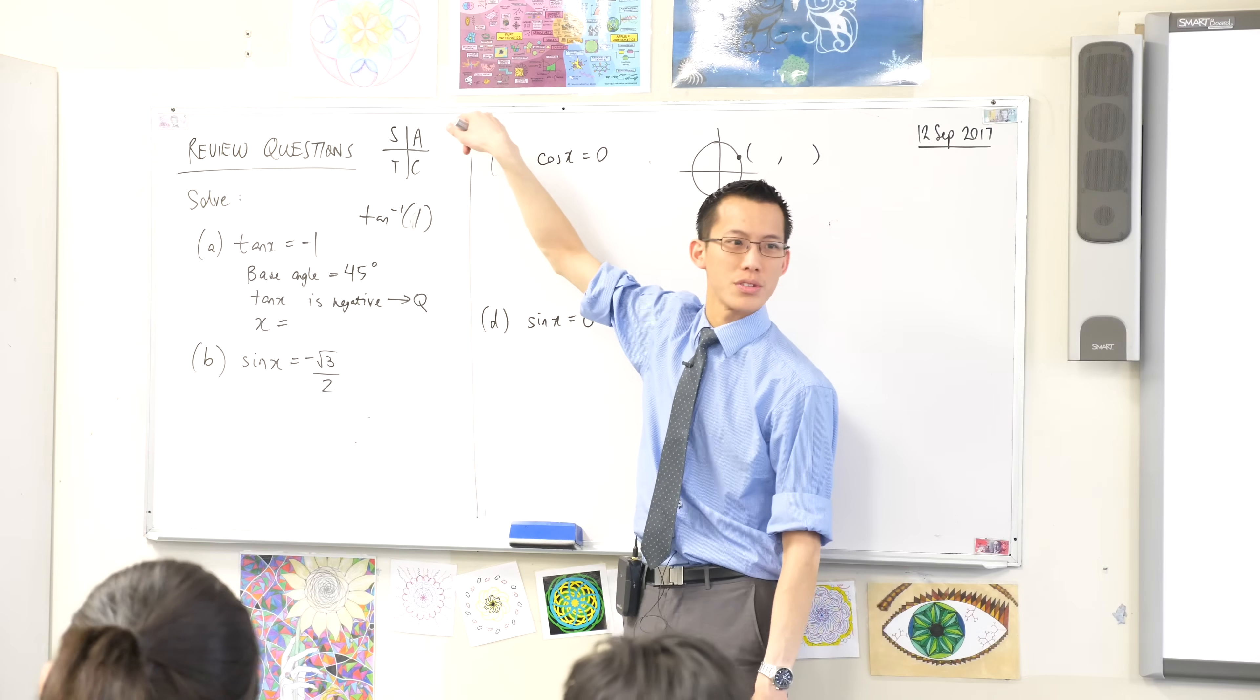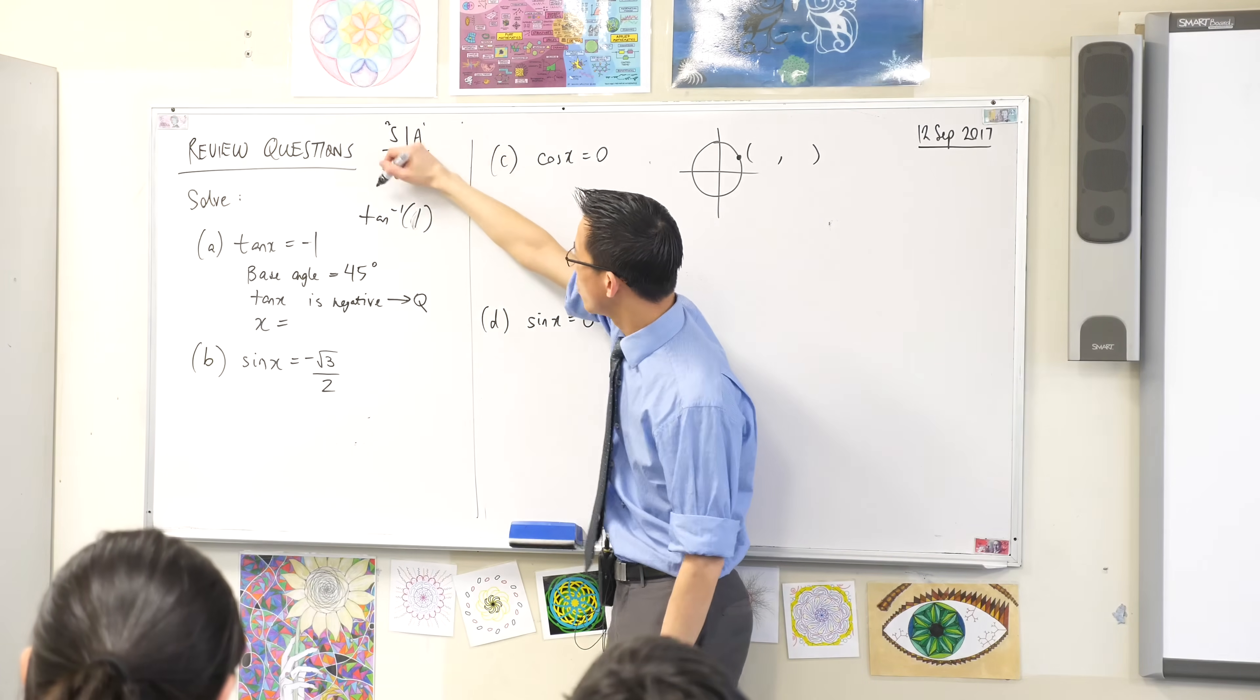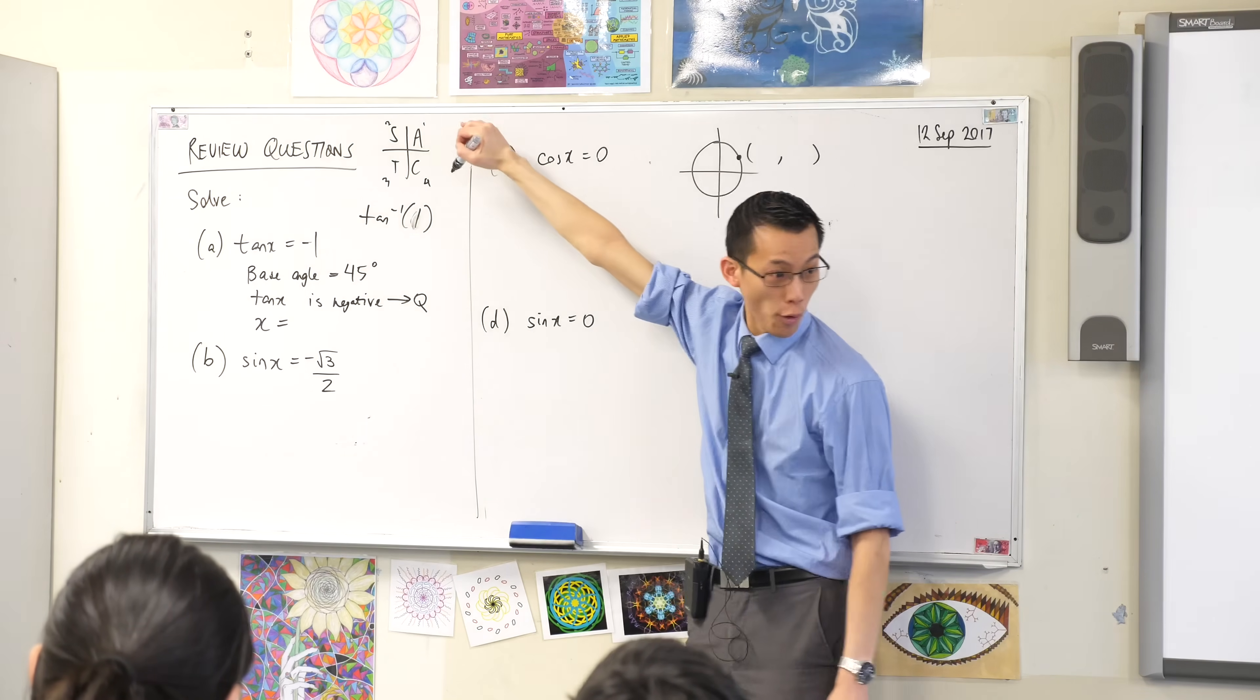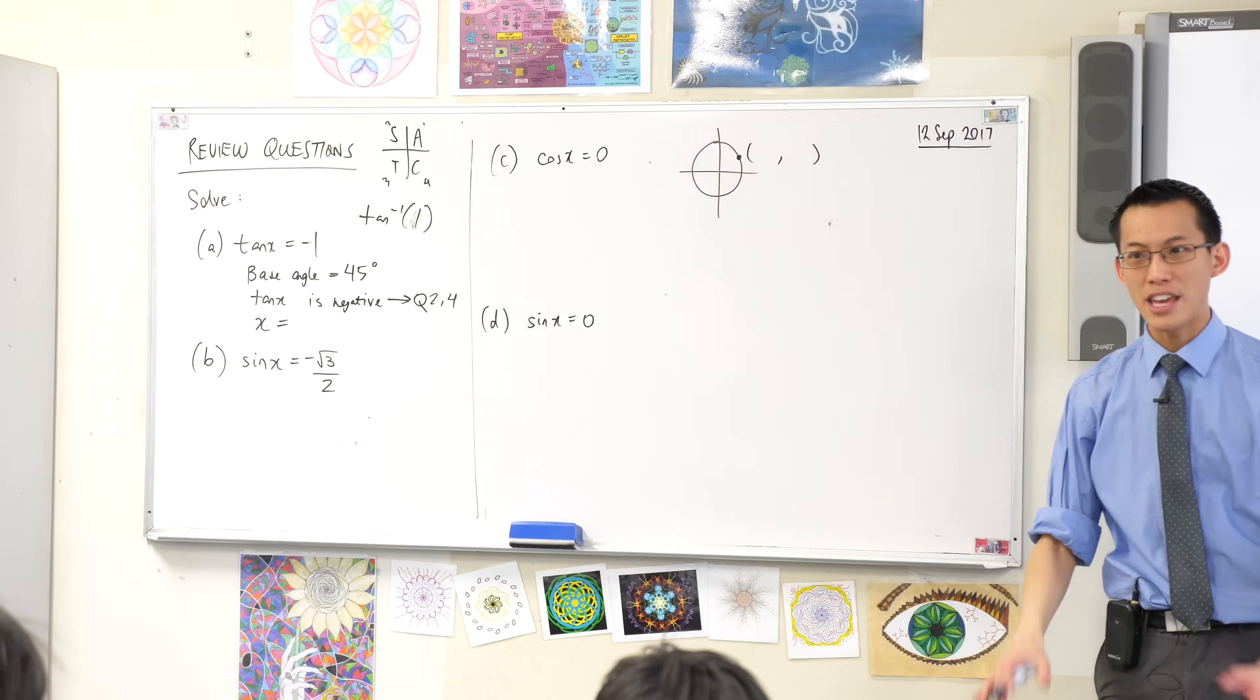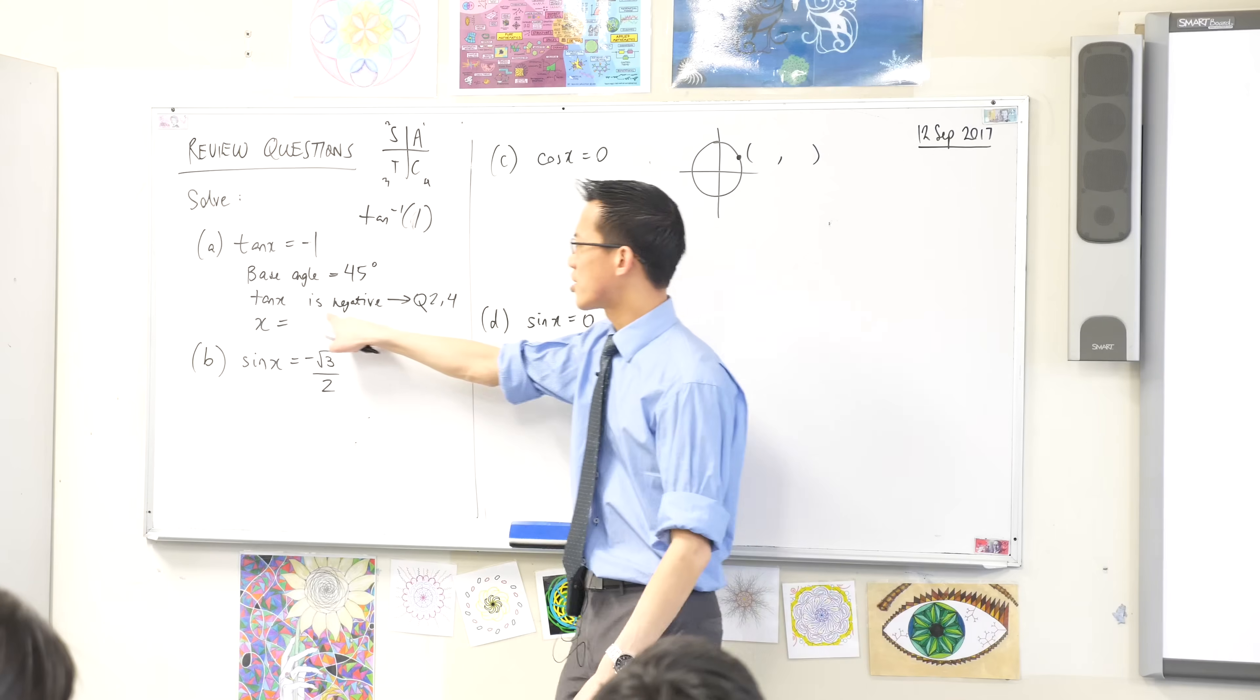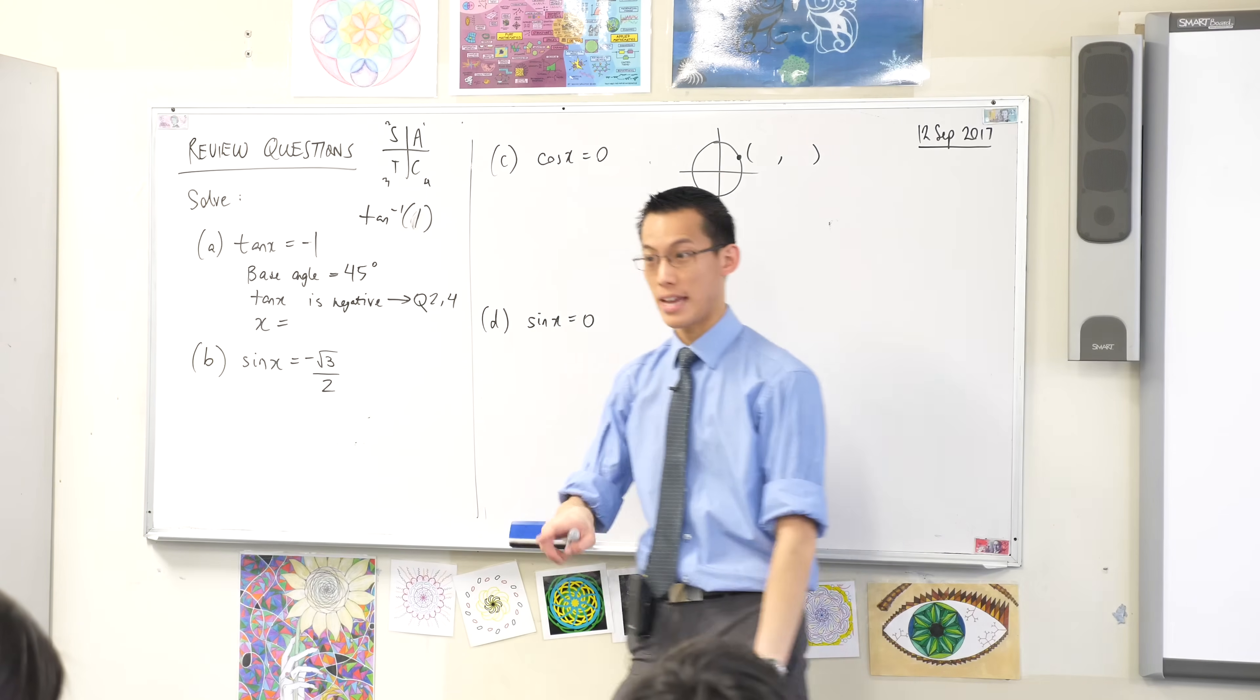One, two, three, four, which quadrants has negative tan? One second. This is one, two, three, four. Two is good. And four is good. Two and four. Two and four. Are you with me so far? Did you see why I did this? Was that part okay?